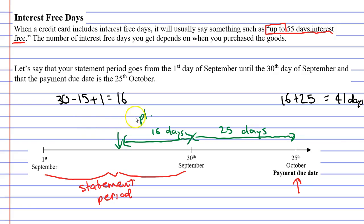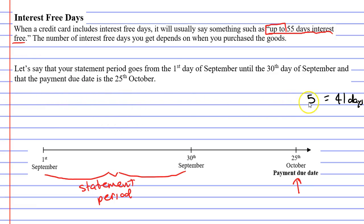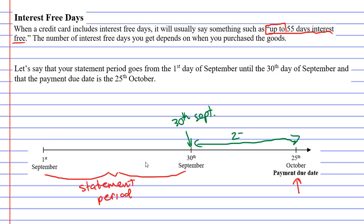What if you bought something right at the end of the statement period? Let's say you purchase something on the 30th of September. From the 1st to the 25th of October is 25 days, and you also get just one day — the 30th of September. So altogether you would get 26 days interest-free.